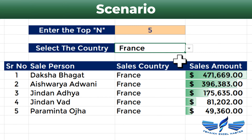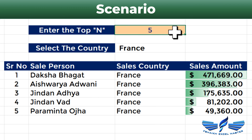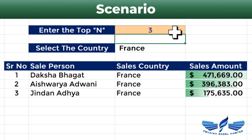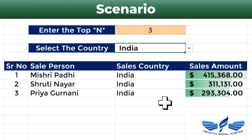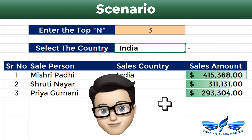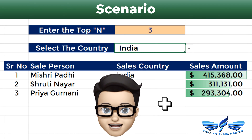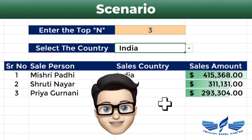We need only the filtered values for France — specifically the top five. Let us change it to three, so we get the top three values in France. Now let us change the country to India and we get the top three values in India.